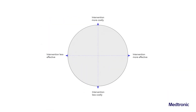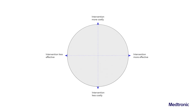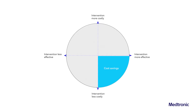The ICER can be plotted on the coordinate plane shown here, where the x-axis represents the effectiveness of the intervention, and the y-axis is the cost. If a new technology is more effective and less costly, it falls in the bottom right quadrant, and a decision-maker would choose this technology over the comparator.